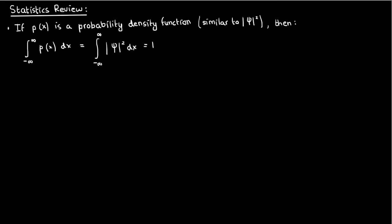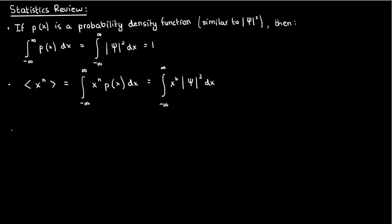This is the normalization condition that we talked about earlier. I can also use the probability density function to find the expectation value of X to the n. Additionally, I can use the expectation values of X to the n to deduce the variance or the uncertainty on the variable X. Hopefully these rules are simple enough, but we'll do practice problems later on in these lectures in case you don't understand them.